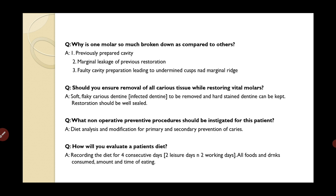Should you remove all carious tissue when restoring vital molars? No — only remove the soft, flaky, infected dentine. The affected dentine, which is hard and stained, can be left. This is especially important in young teeth with large pulp chambers, where complete removal risks pulpal exposure. Indirect pulp capping has a better prognosis than direct pulp capping, so when approaching the pulp, leave some affected dentine and ensure a proper seal — sealing the tooth is the priority.